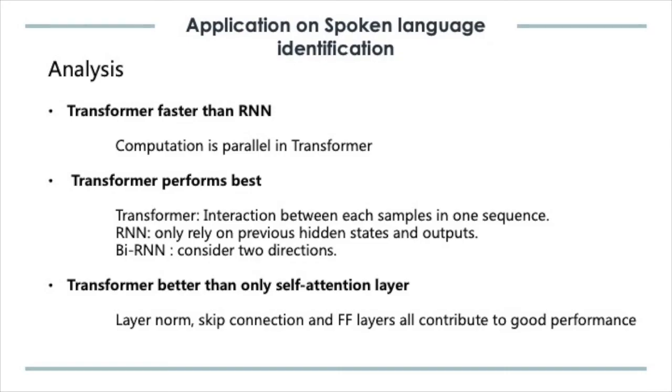The reason why these two models perform relatively well is that transformers use self-attention layers to take into account the correlation between each sample in one sequence. Bidirectional RNN takes two directions instead of just the previous state like regular RNN.